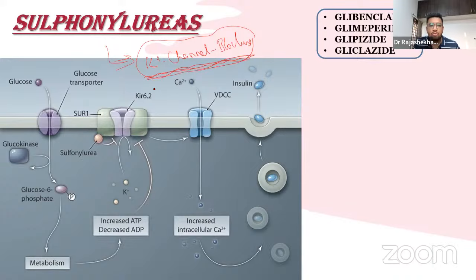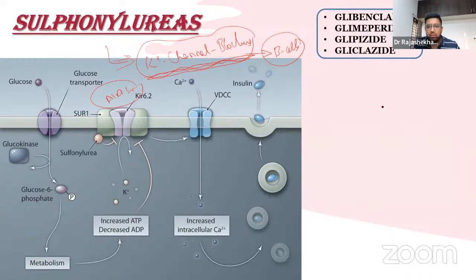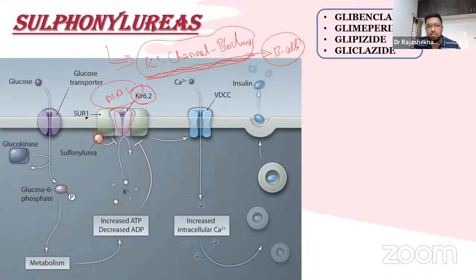Sulfonylureas act on ATP-sensitive potassium channels (KATP channels) in the beta cells of the pancreas. These channels consist of a central pore, KIR 6.2, and a surrounding sulfonylurea receptor — SUR1 in the beta cell — which has a specific binding site for sulfonylureas.